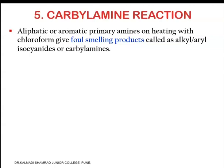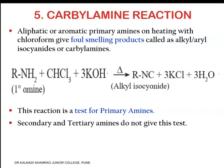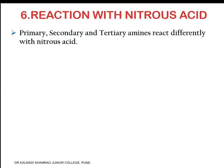The fifth reaction is the carbylamine reaction. Aliphatic or aromatic primary amines, on heating with chloroform, give foul-smelling products called alkyl or aryl isocyanides (carbylamines). The reaction is: R-NH2 + CHCl3 + 3KOH gives R-NC (alkyl isocyanide) + 3KCl + 3H2O. This reaction is a test for primary amines — secondary and tertiary amines do not give this test. If you add chloroform and KOH to a test tube and get a foul smell, it indicates the presence of a primary amine.